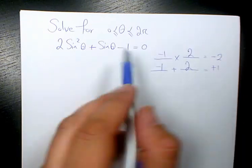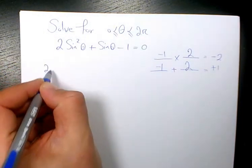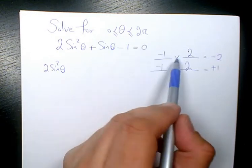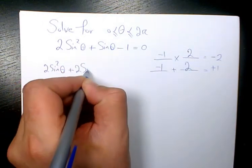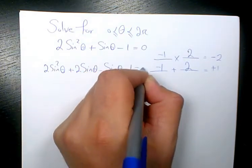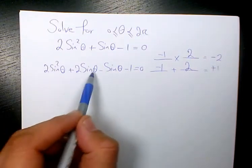So I'm going to use these two numbers to rearrange this equation. So 2 sine squared theta, I'm going to write it like that. Instead of sine theta, I will write 2 sine theta minus sine theta. So it's going to be 2 sine theta minus sine theta minus 1 equals to 0. Then you group factor that.